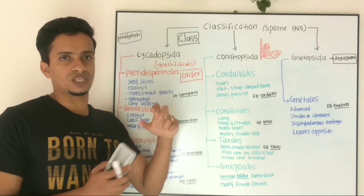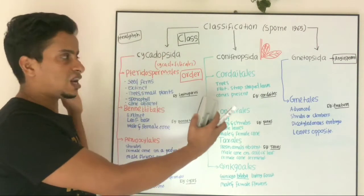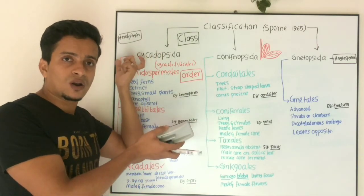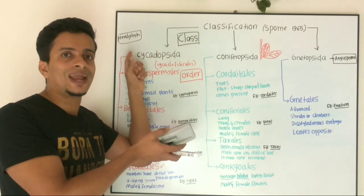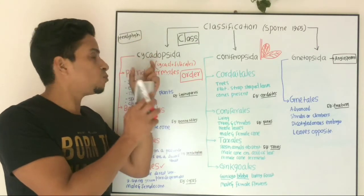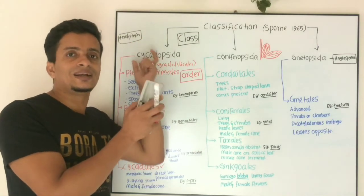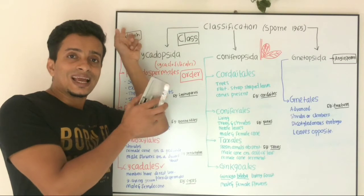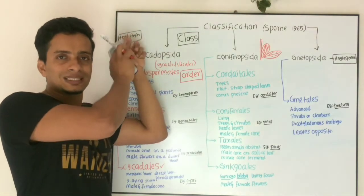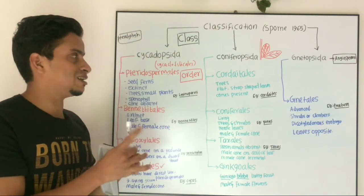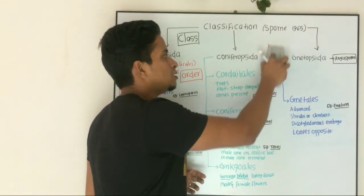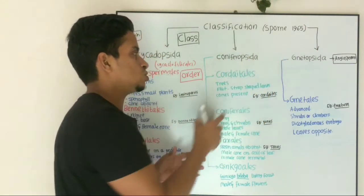When you look at the classification from the left side, you can see that the first member of the gymnosperm may possess similarities with the last member of the previous group. That is what I will explain. Now we will take the classification of gymnosperms.